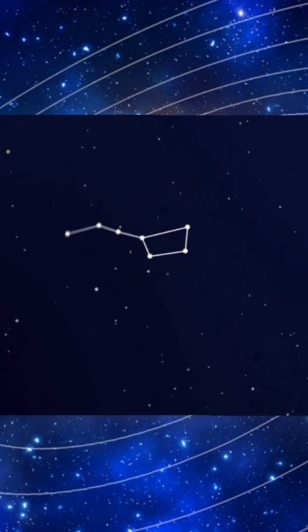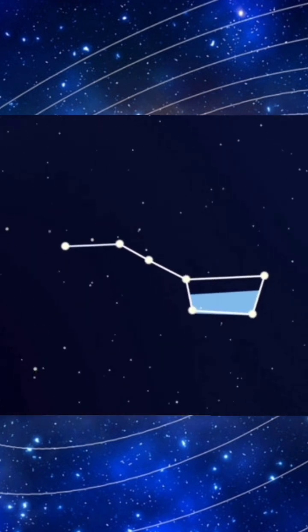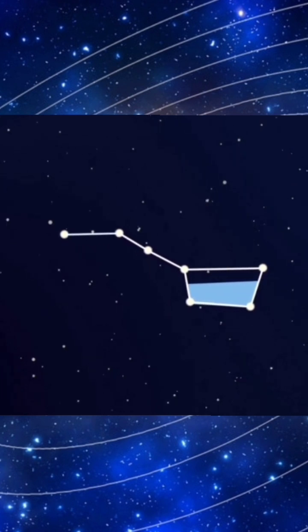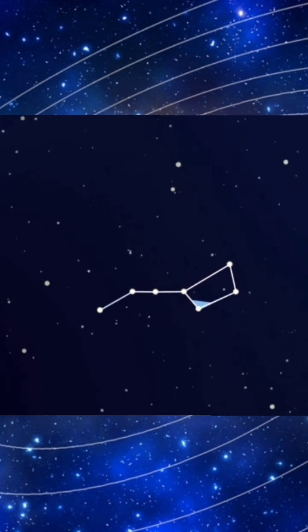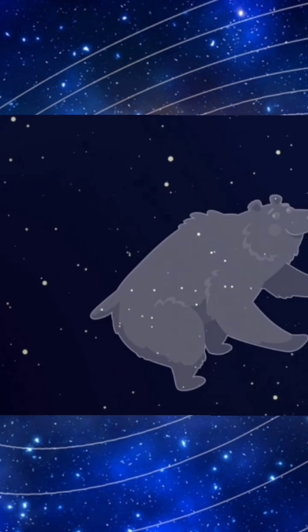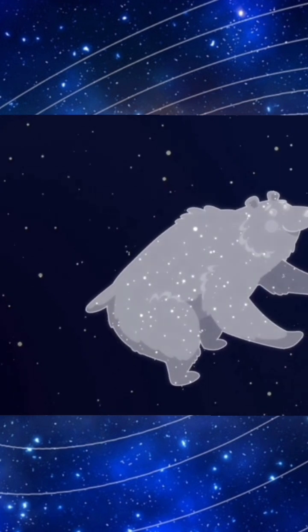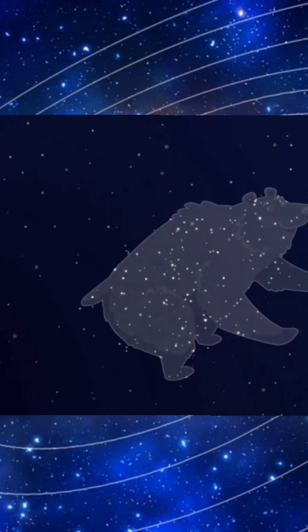You can easily find it by seven bright stars in the shape of a dipper with a long handle. These seven bright and 200 less bright stars in this part of the sky make up the constellation.